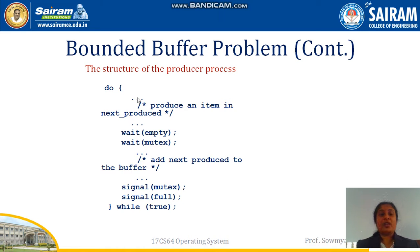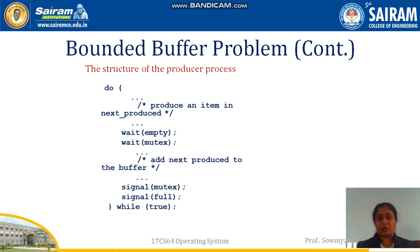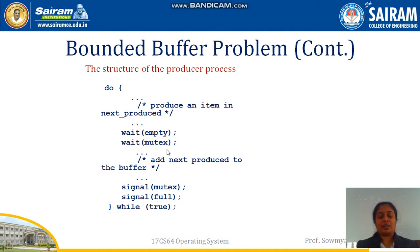In the producer process, once the producer needs to write data to the bounded buffer, it produces an item. Then it waits on empty — if the bounded buffer has already been read by the consumer, wait on empty returns. Then it waits for mutex. Initially the mutex value is 1; if a writer is accessing the buffer it becomes 0.